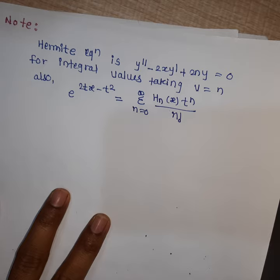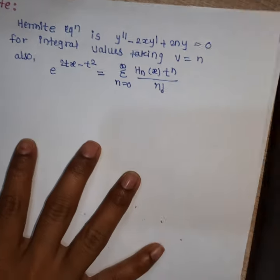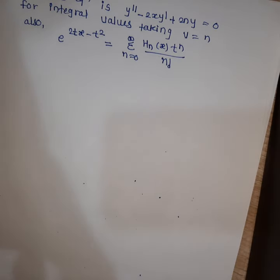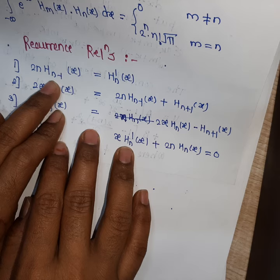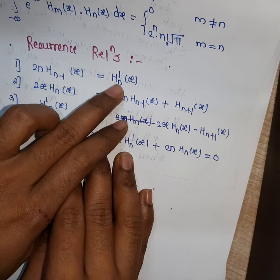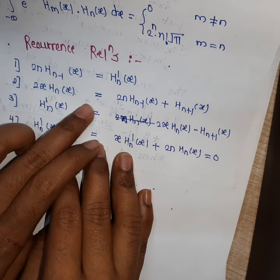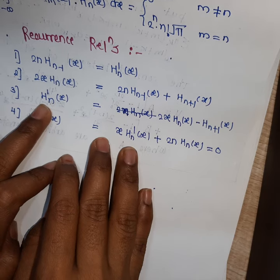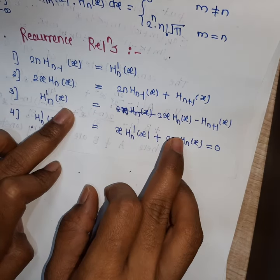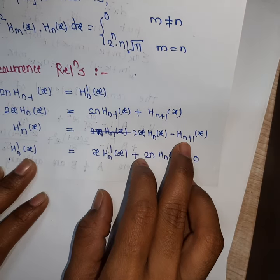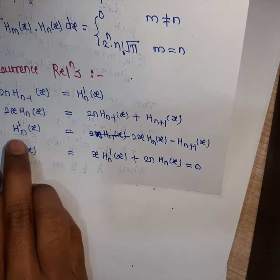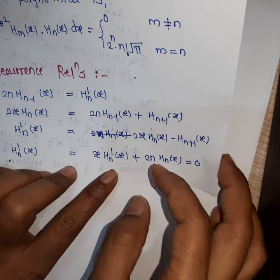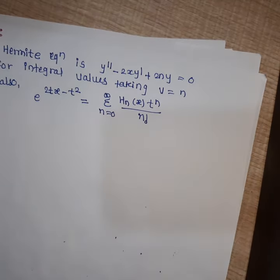To repeat all four recurrence relations: (1) 2n Hₙ₋₁(x) = Hₙ′(x); (2) 2x Hₙ(x) = 2n Hₙ₋₁(x) + Hₙ₊₁(x); (3) Hₙ′(x) = 2x Hₙ(x) − Hₙ₊₁(x); (4) Hₙ″(x) − x Hₙ′(x) + 2n Hₙ(x) = 0.